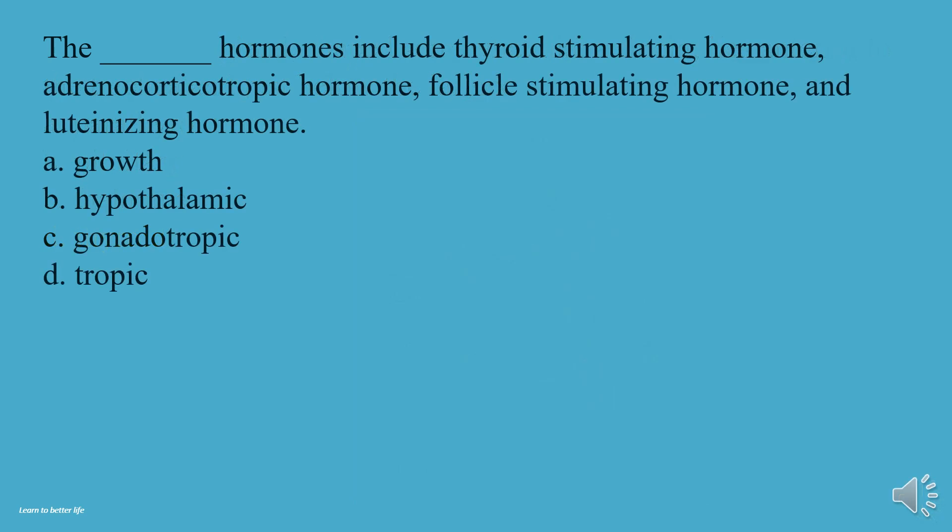What hormones include thyroid stimulating hormone, adrenocorticotropic hormone, follicle stimulating hormone, and luteinizing hormone? A, Growth. B, Hypothalamic. C, Gonadotropic. D, Tropic. The answer is D, Tropic.